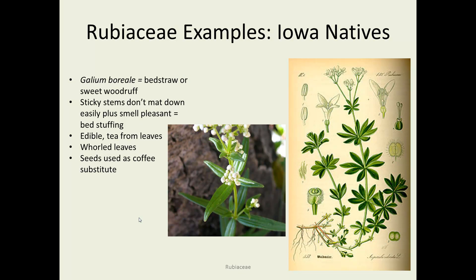Another Iowa native is bedstraw — a sticky plant that tends to stick to your jeans if you're walking in a prairie, but it is native. Historically it was used to stuff bed ticks, filling mattresses with dried plant material for padding. Because it's so sticky, it stays fluffy even after being compressed, and it has a pleasant odor — two reasons to use it in your mattress. It is edible; sometimes people make a tea from it. The leaves are whorled, and you can see the tubular flowers in the drawing. The seeds are sometimes used as a coffee substitute.